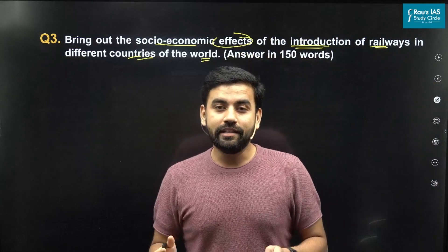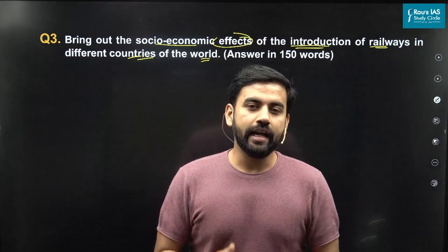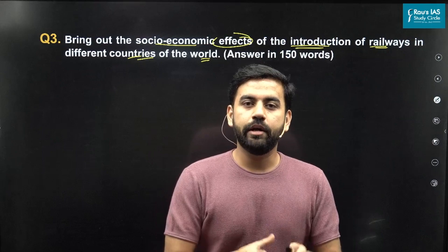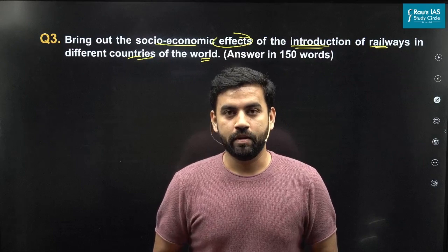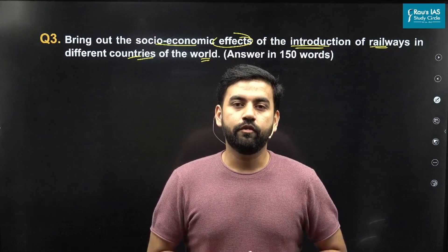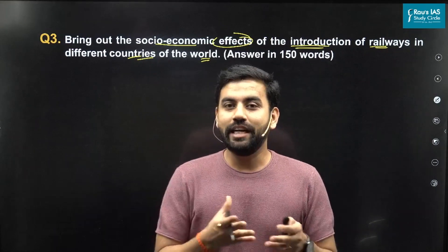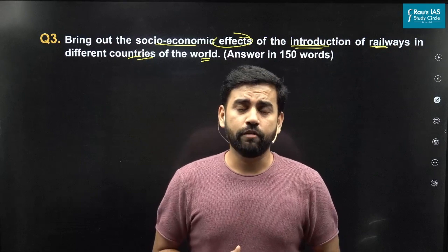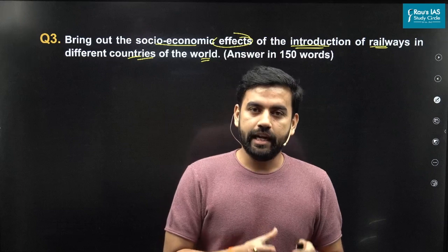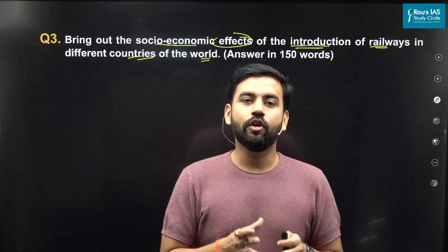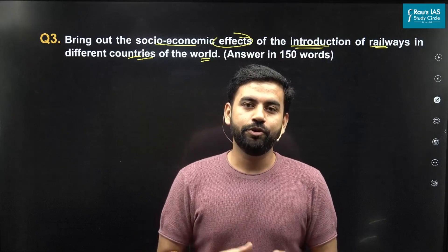Now the moment you see 'world', it seems that it is a world history question — no doubt it is. But understanding each and every country and the development of railways across those countries seems to be impossible. So how to deal with this question? You can take examples from countries you might have heard about, which include the industrial revolution of England, the American revolution, the history of South Africa, and of course India itself. The introduction of Indian railways and its socio-economic impact could be a guideline for you to answer this question.